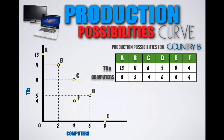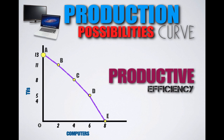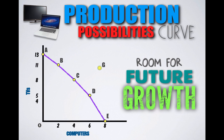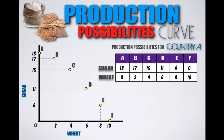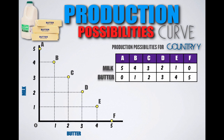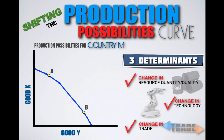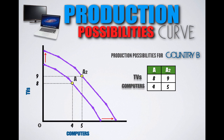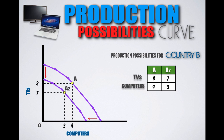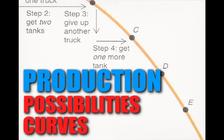Let's review today's major points. A production possibilities curve is a visual representation of all combinations of goods a country can produce given its resources. Points on the PPC represent productive efficiency; points inside represent productive inefficiency; points outside represent room for future growth. An outward bowing PPC represents increasing opportunity cost; a straight negatively sloped PPC represents constant opportunity cost. A PPC only shifts with a change in resource quantity or quality, a change in technology, or a change in trade. An outward shift represents economic growth; an inward shift represents economic contraction. Thank you for joining me — I'll see you next time on Intro to Macro.